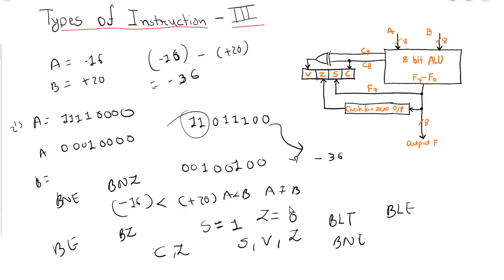Some computers consider carry to be a borrow bit after the subtraction A minus B. Borrow does not occur if A is greater than B. The condition for borrow is the complement of the carry obtained when the subtraction is done by taking two's complement of B.